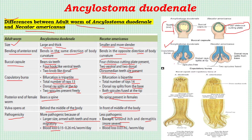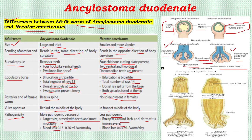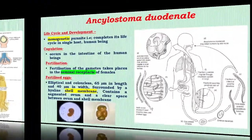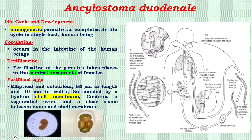In Ankylostoma the copulatory bursa structure has a dorsal ray splitting at the tip and free spicules, but in Necator the dorsal ray splits from the base and the two spicules are fused. These are the key differences between the two hookworms.